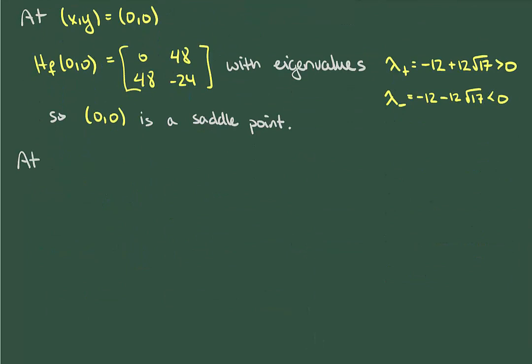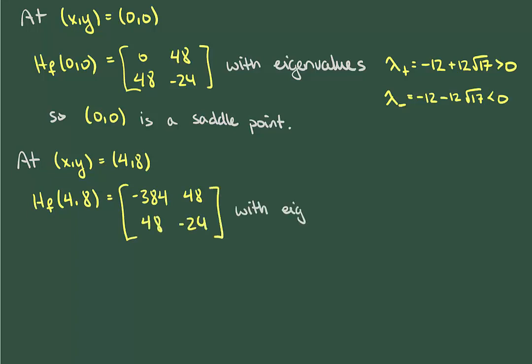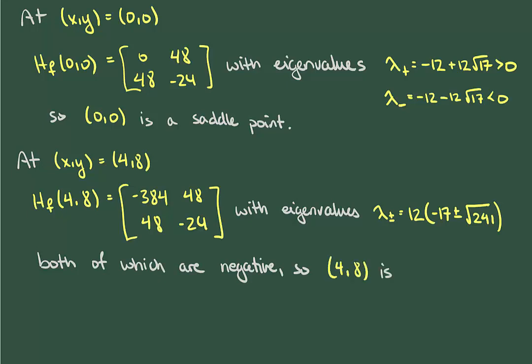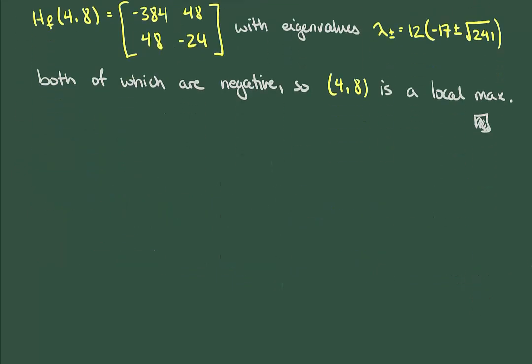Finally, we look at (4,8), whose Hessian matrix is the following. And if we work out its eigenvalues, in this case both end up being negative, meaning that (4,8) is a local maximum. So even skipping all of the eigenvalue computations, this ended up being a lot of work.